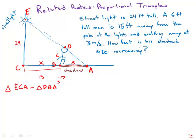And so we know that in the small triangle, S over 6 equals in the large triangle the whole length of AC, which is S plus X over 24.